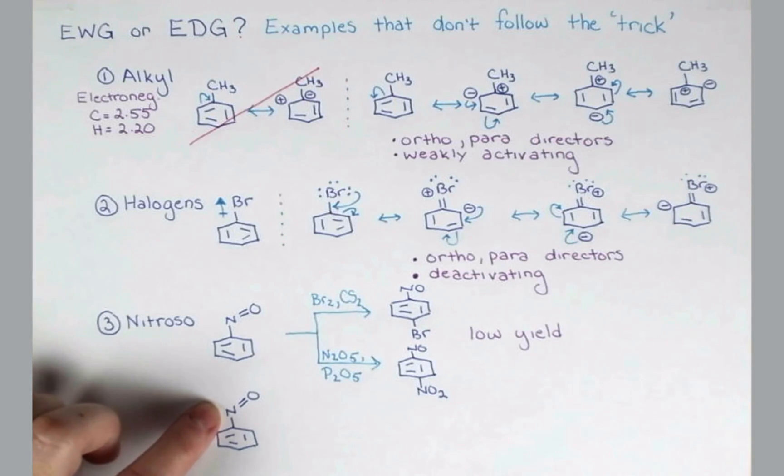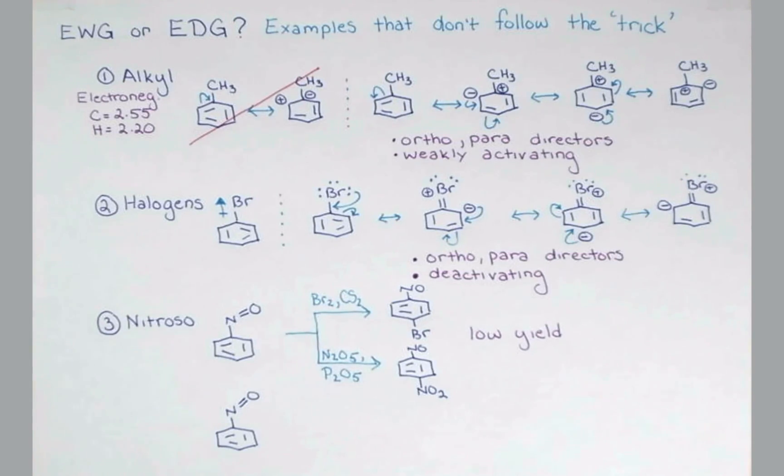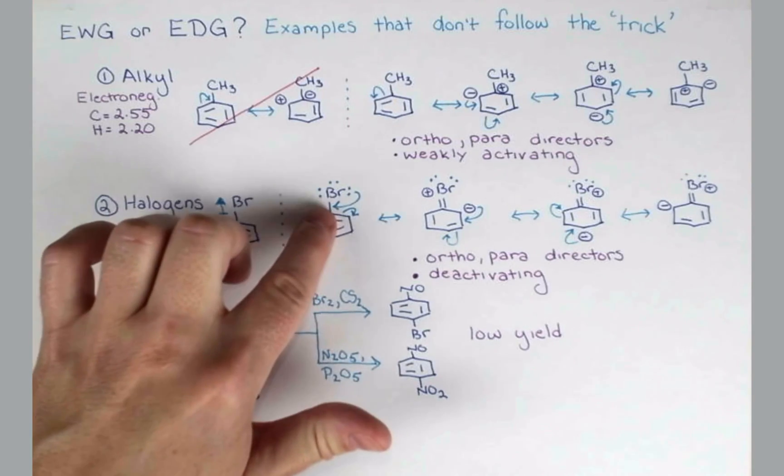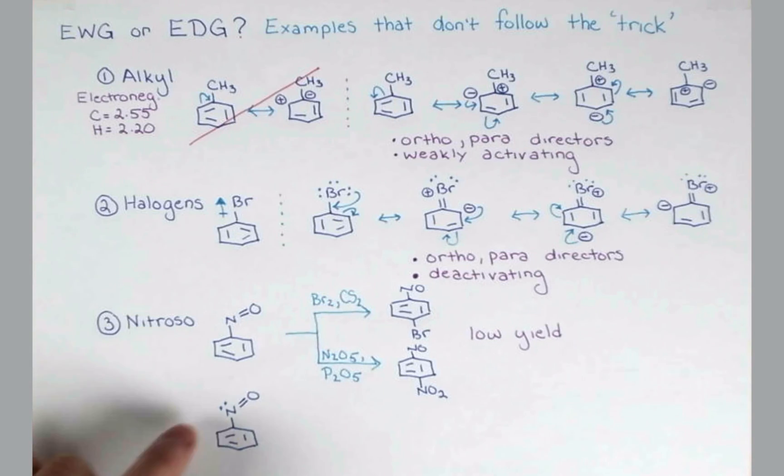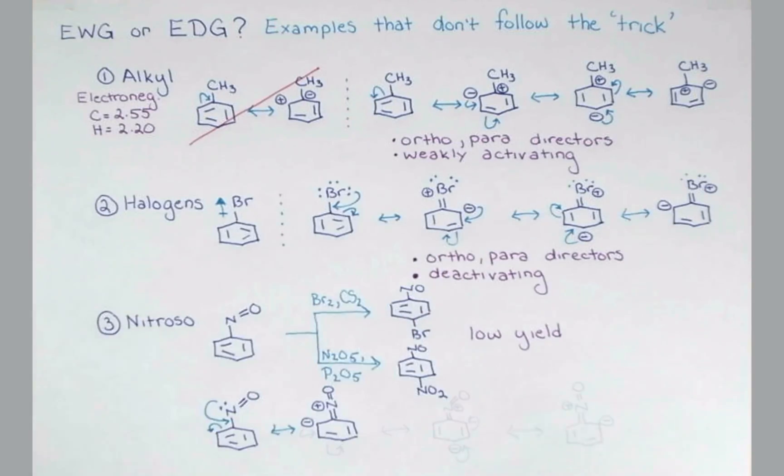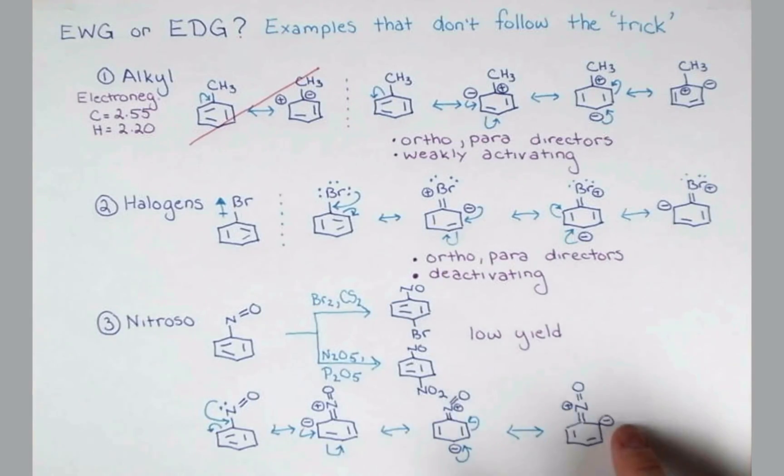This nitrogen atom here is neutral. We're showing three bonds to it, there's no charge, and that means it has a lone pair of electrons on it. So just like the halogens, we can push these electrons into the ring and draw resonance forms. And again, like the halogens, we can continue pushing around the ring. And these have electron density at the ortho and para positions.